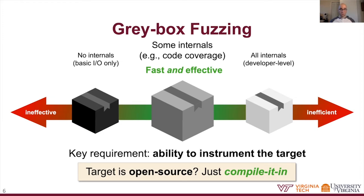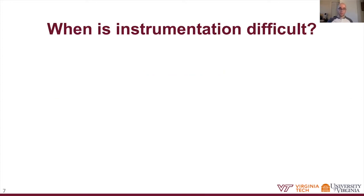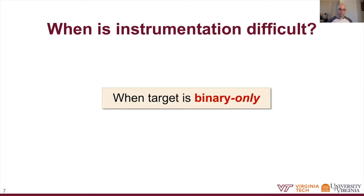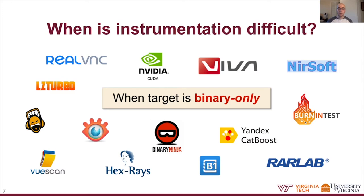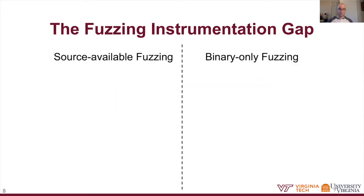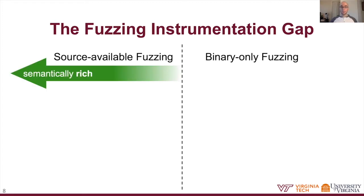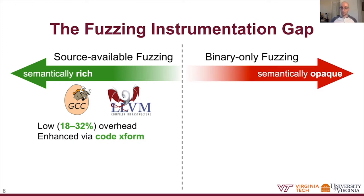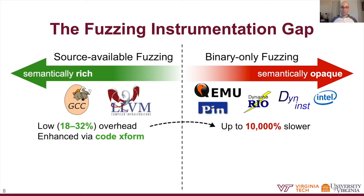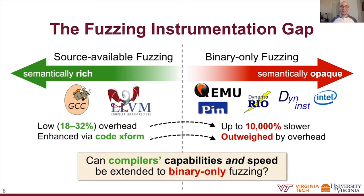If your target program is open source, you can just use any off-the-shelf compiler and add instrumentation at compile time. However, if your target program is distributed as binary-only—meaning you don't have access to the source code, due to proprietary reasons, commercialization, or because developers prefer to release pre-compiled code—you're kind of out of luck. There's a big gap in fuzzing between source-available and binary-only instrumentation. The semantic richness of open source code makes it easy to get high-efficiency fuzzing instrumentation and add fuzzing-enhancing program transformations, while the semantic opaqueness of binary-level code makes it much harder, causing high instrumentation overhead. Our motivating question was: can compiler-level speed and capabilities be attained in a binary-only fuzzing use case?